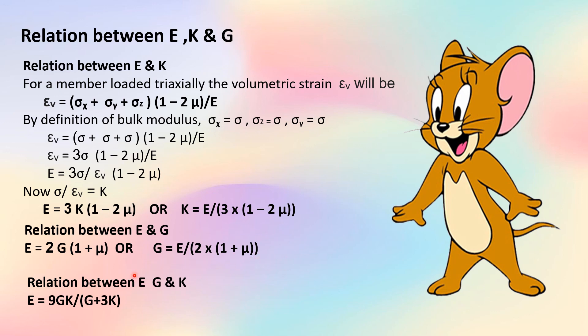The combined relation between E, G, and K (without mu) is E equals 9GK divided by (G plus 3K). These are the formulas which will be used in the next video while solving problems.